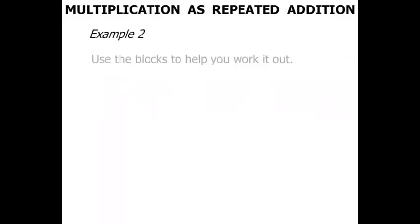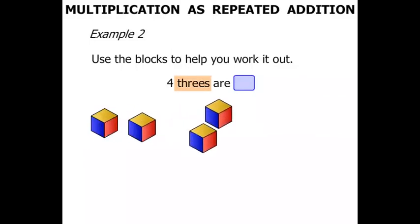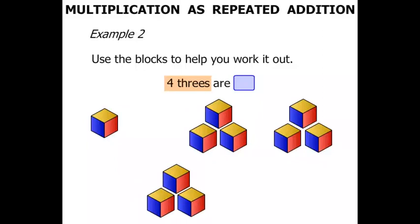Example 2 now. Use the blocks to help you work it out. We've got 4 3's are something. We're going to deal with 3's, so let's do groups of 3's. 1, 2, 3 — there's our first group of 3. We want 4 3's, so let's start moving the blocks around. There's another group of 3 — we've got 2 3's now. Keep moving them around — we've got 3 3's now. And finally another group of 3. We've got 4 3's.